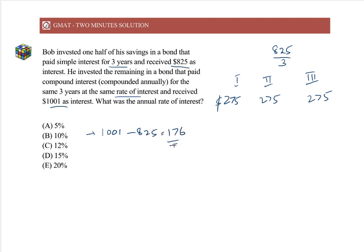Why was this higher? Because CI is interest on interest. In compound interest, we earn interest on the previous year's interest, and that's why that extra amount was $176. First year, the compound interest was the same, $275. Second year, it was $275 plus R percent of the interest of the previous year, so there was an additional R percent of $275.